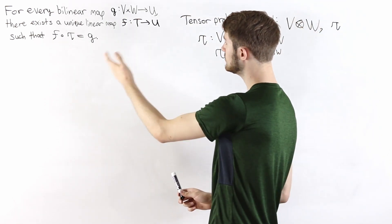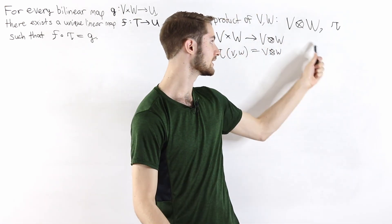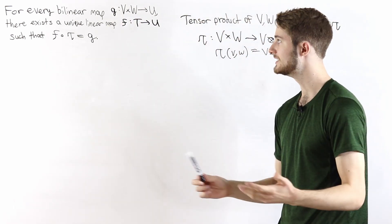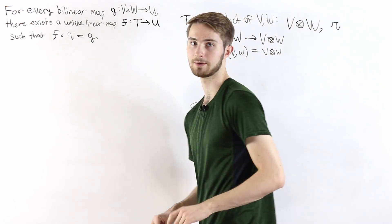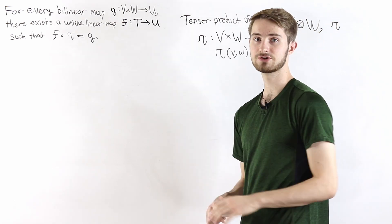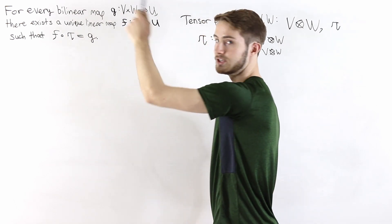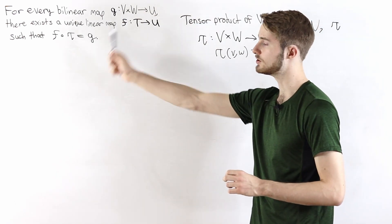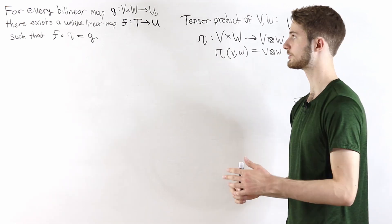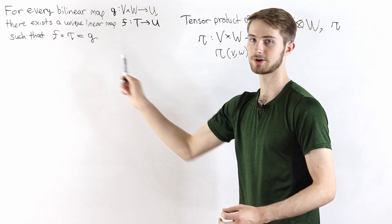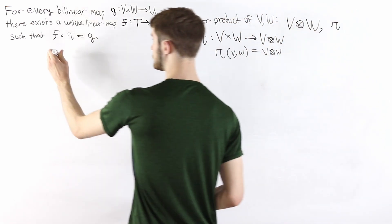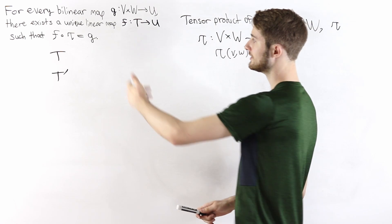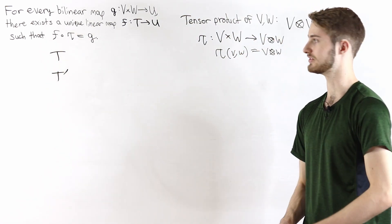In this universal property statement, I wrote T rather than V tensor W, because this universal property is a condition that could apply to any vector space along with an associated map tau. It's possible that some vector space other than the tensor product could also satisfy this universal property if paired with the right map. The goal of this video is to prove that the tensor product is the only vector space satisfying this universal property — i.e., that it is unique up to isomorphism.